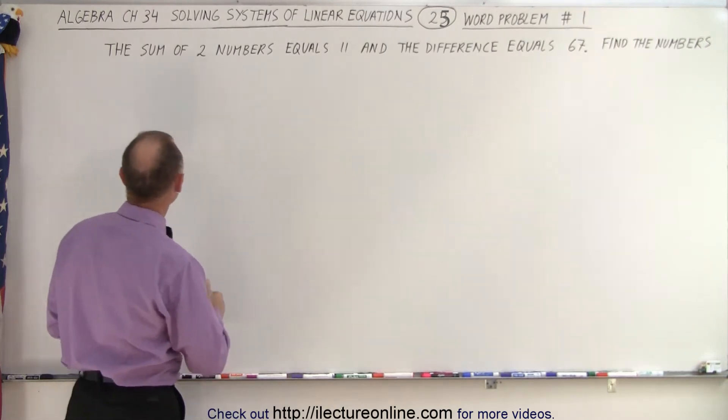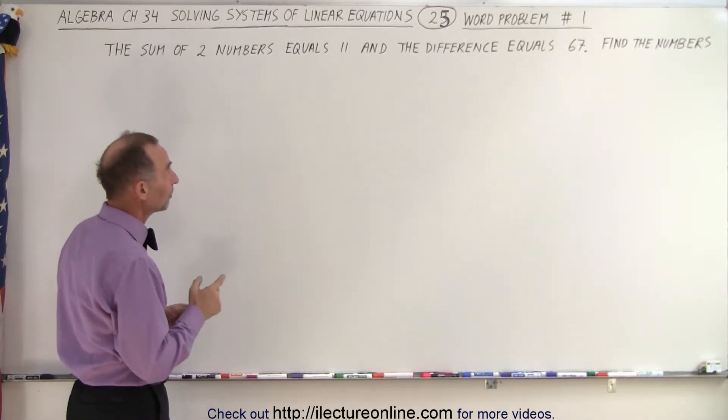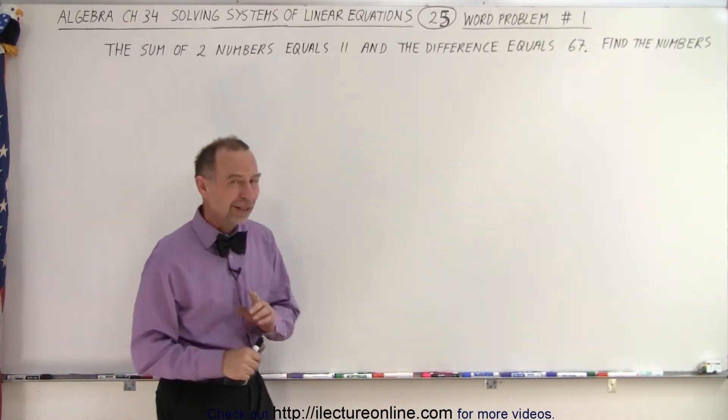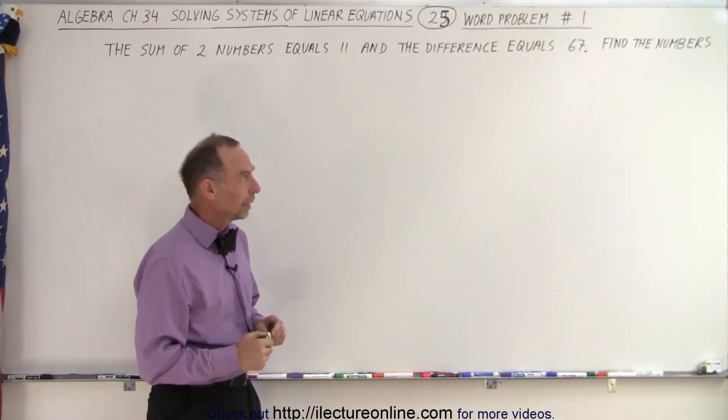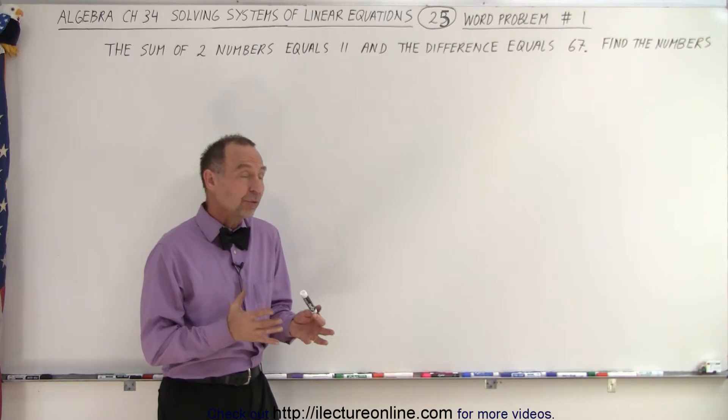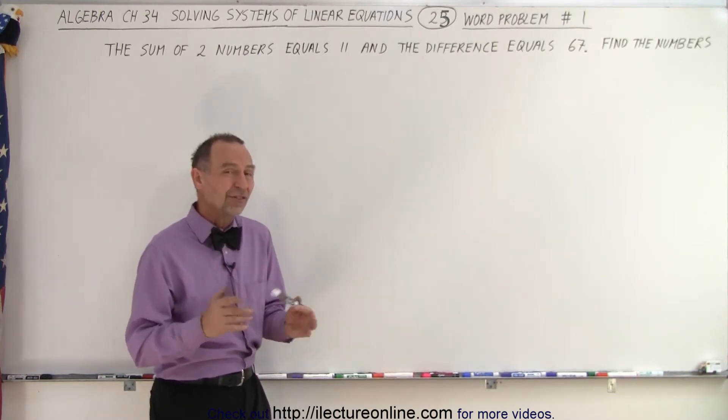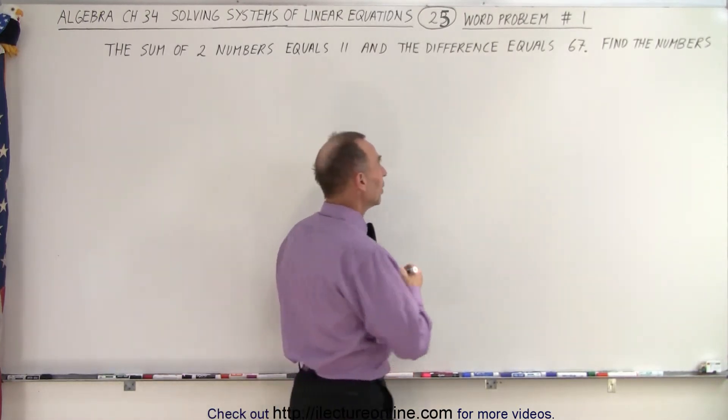Here we're told that the sum of two numbers equals 11 and the difference equals 67. So let's find those two numbers. First we need to define the numbers, but we're going to use two variables instead of just one variable.